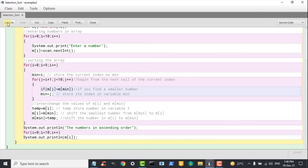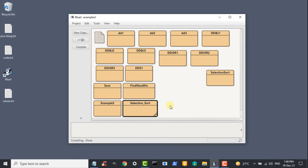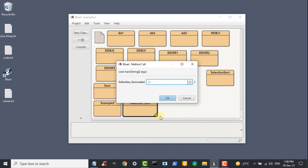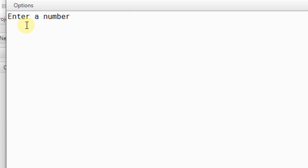Save the program. Compile it. Then right click on the program icon, select void main string arguments. Then press ok. Now we are being asked to enter a number. We need to enter a total of 10 numbers.